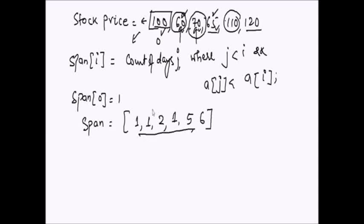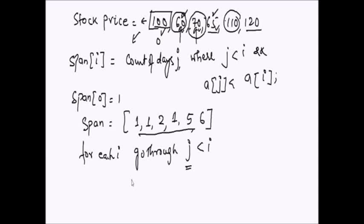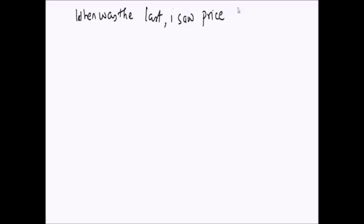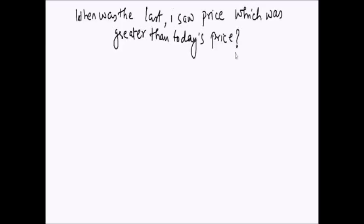One brute force solution uses two iterations: for each day i, go through all j less than i and find consecutive days with price less than a[i]. The complexity of this algorithm is O(n²). Can we do better? The key insight is we only need to know when was the last time we saw a price greater than today's price — we don't need to scan all the way back to j equals 0.